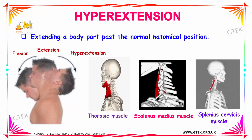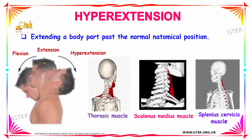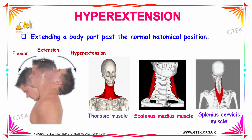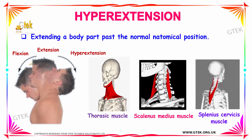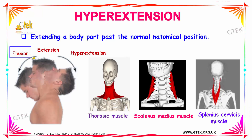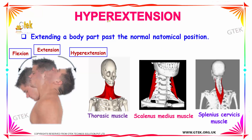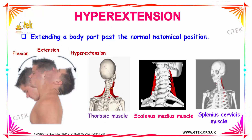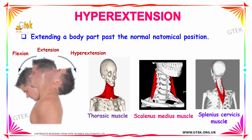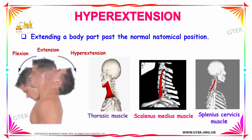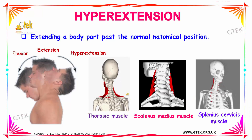Our next movement is hyperextension. If you extend a body part past the normal anatomical position then it is known as hyperextension. If you bend the head forward then it is known as flexion, bringing it back to normal position is extension, and if you bring back your head past the normal position then it is known as hyperextension. The muscles such as your thoracic muscle, scalenus medius muscle, and splenius cervicis muscle are the muscles that help you to make these movements.